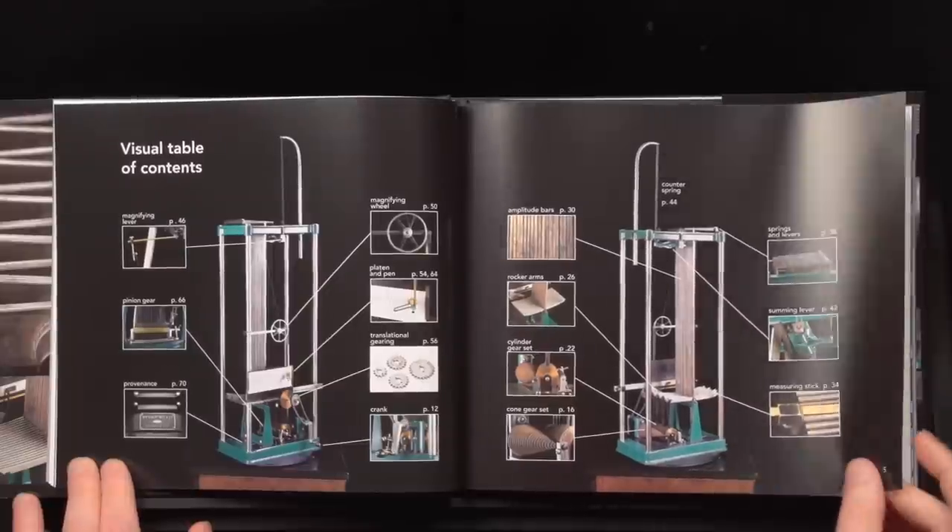This visual table of contents shows you the main parts of the machine, and it lists the pages where that part is located in the book. These pages also serve as a visual table of contents. We link the parts of the analyzer to their mathematical function. Here we do that for synthesis.